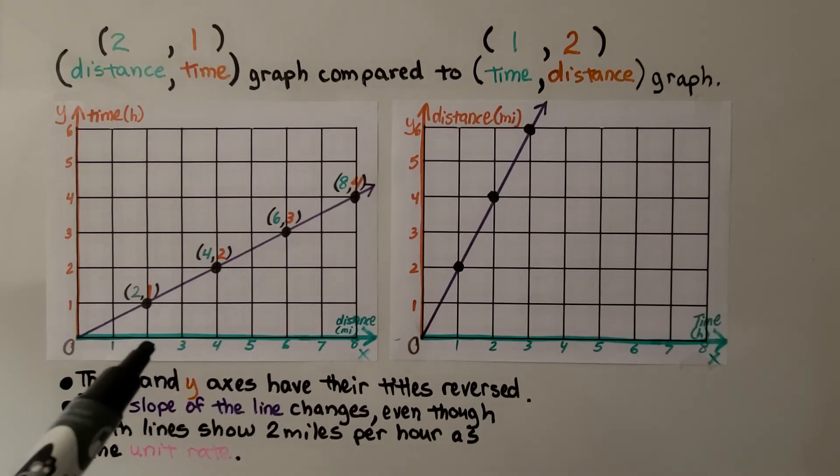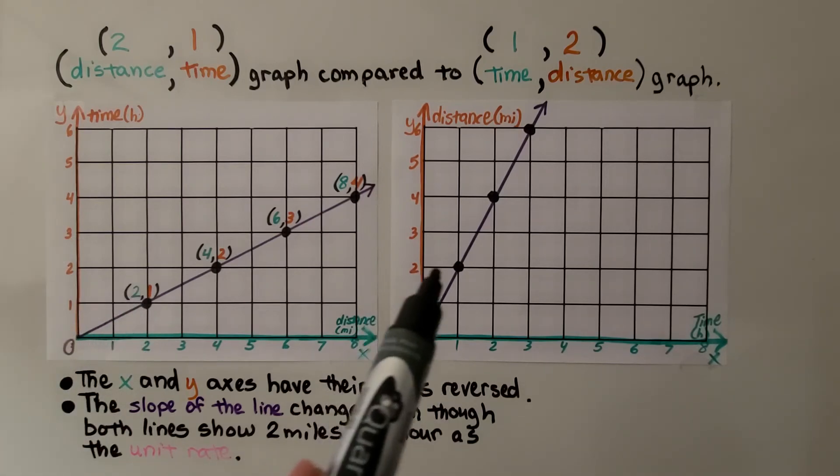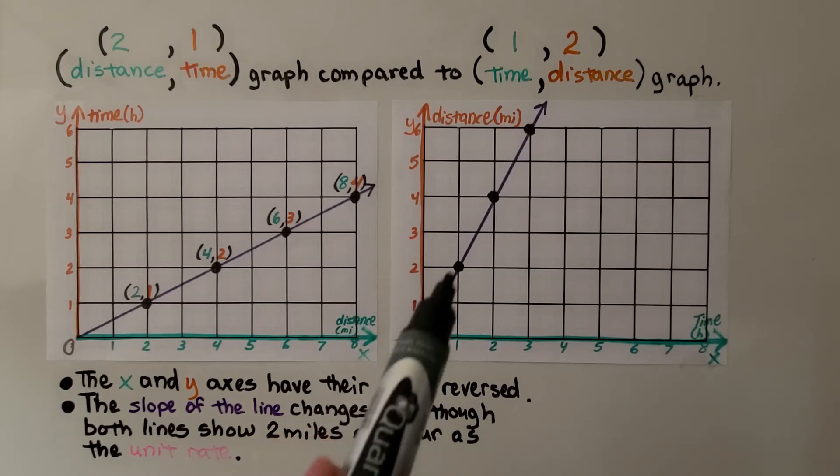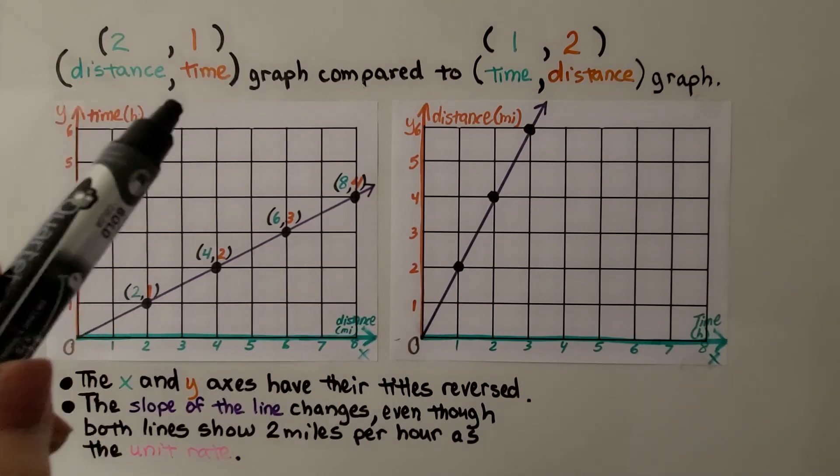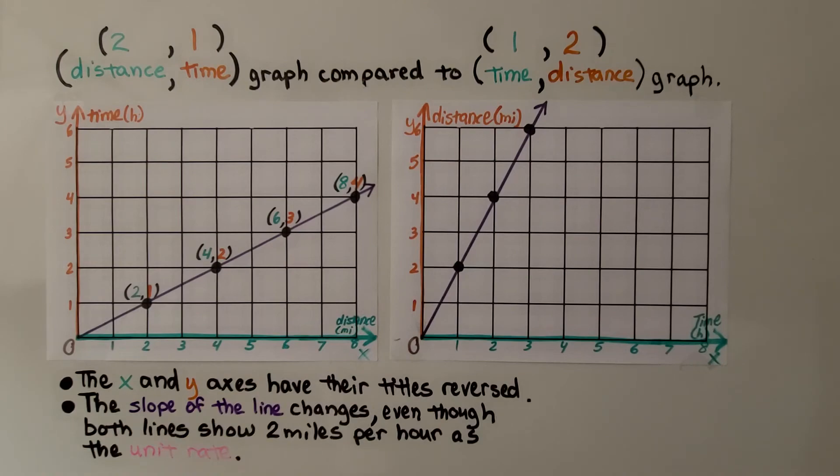Here we have our distance, we went 2 miles in 1 hour. And here we went 2 miles in 1 hour. So, they're both showing 2 miles per hour. But, look at the difference in the slope, because we switched the order and assigned them a different x and y value.